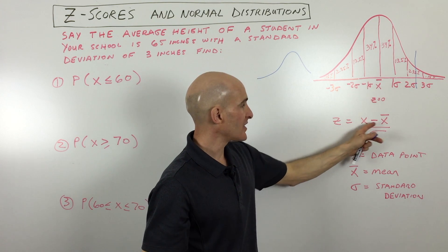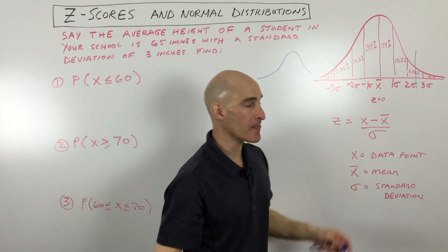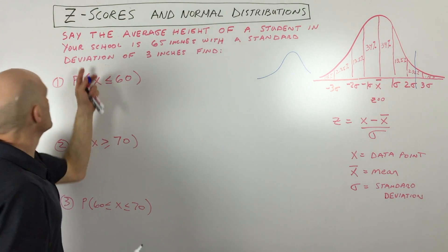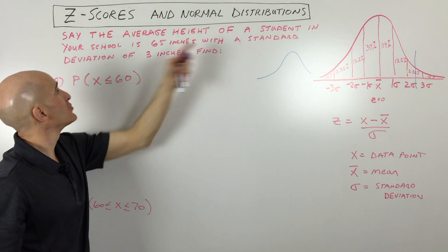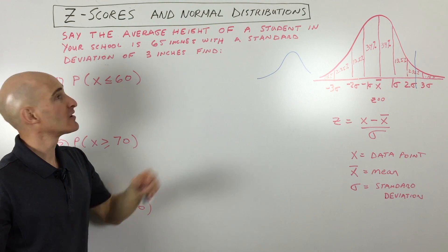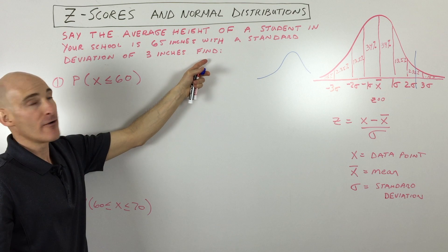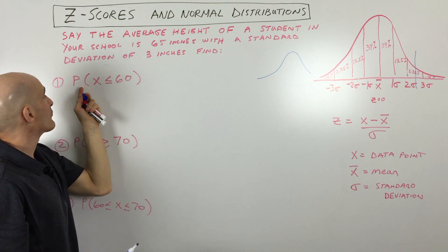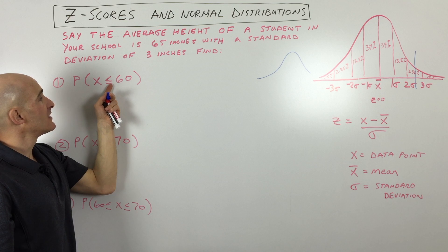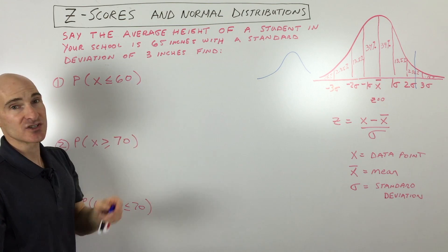So again, x is our data point, x-bar is the mean, and sigma is our standard deviation. Let's look at an example. Say that the average height of a student in your school is 65 inches with a standard deviation of 3 inches. Find the probability that if you pick somebody at random, their height is less than or equal to 60 inches.